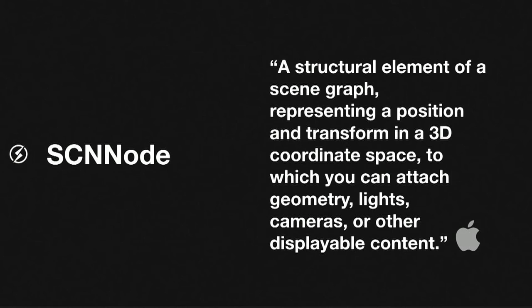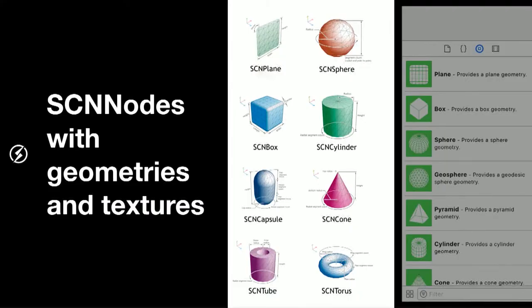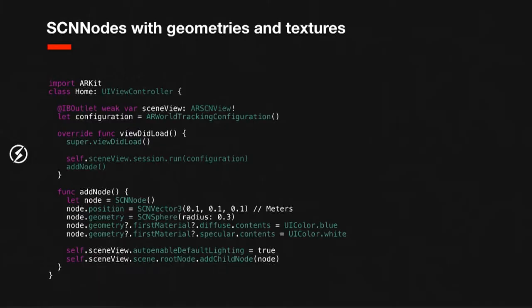First you have to understand the concept of a node. Apple gives us a description, but I prefer to say it's just a place in this three-dimensional world where you can put objects, cameras, lights — everything. So first we need to set a node and then set a geometry with textures or just colors. These are the textures that Apple gives us and you can drag and drop them from the interface builder, or we can do it by code like we're going to do in our example.